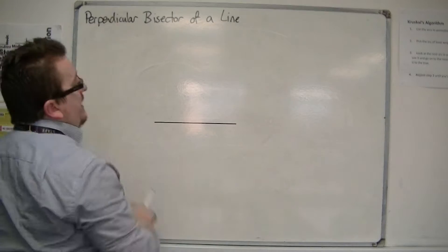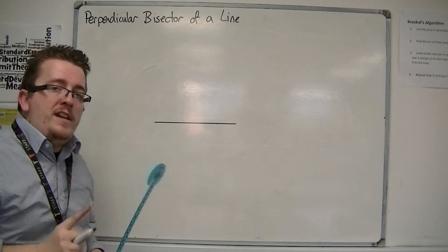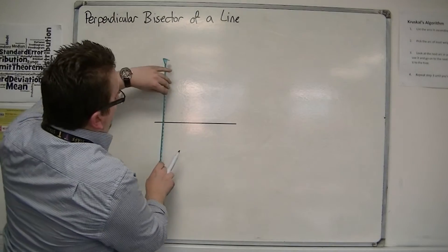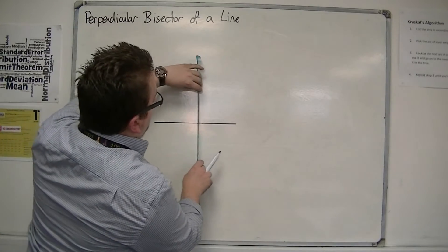The word perpendicular means at right angles to. So I should be drawing a line that makes a right angle with the line that I have.